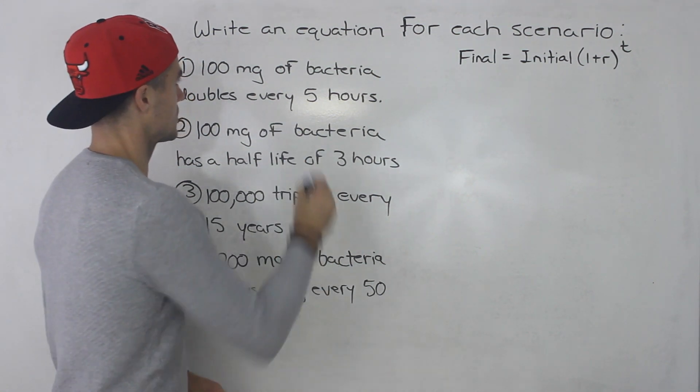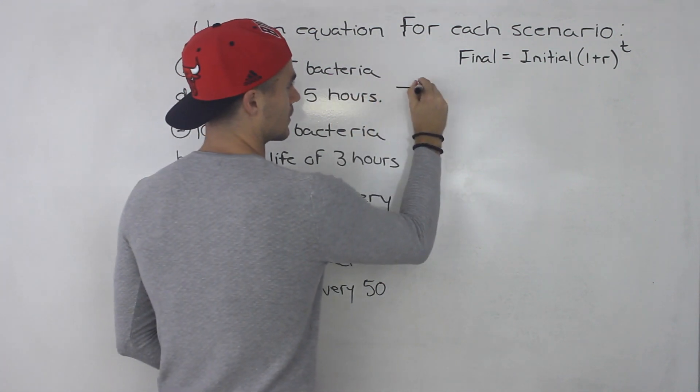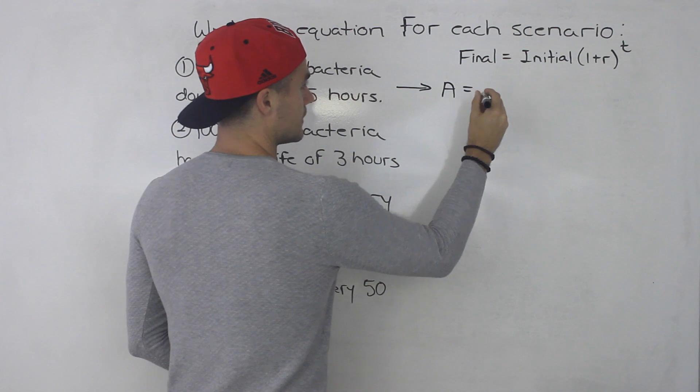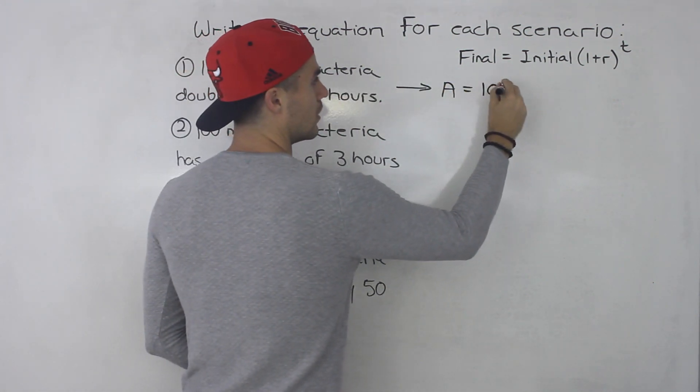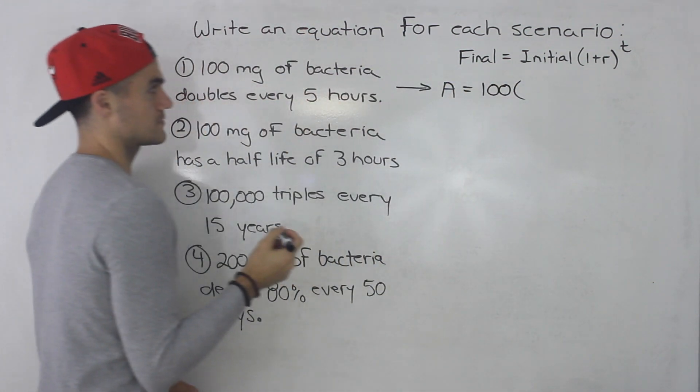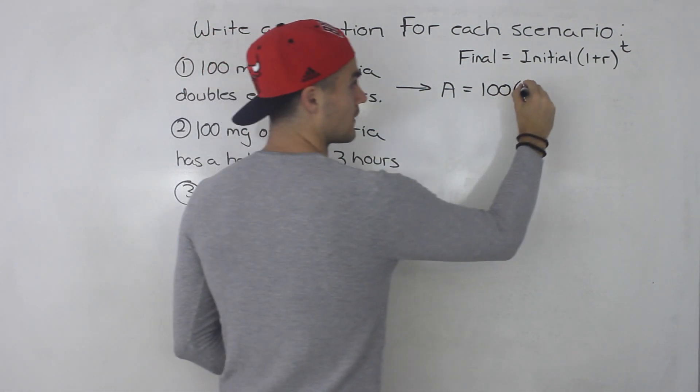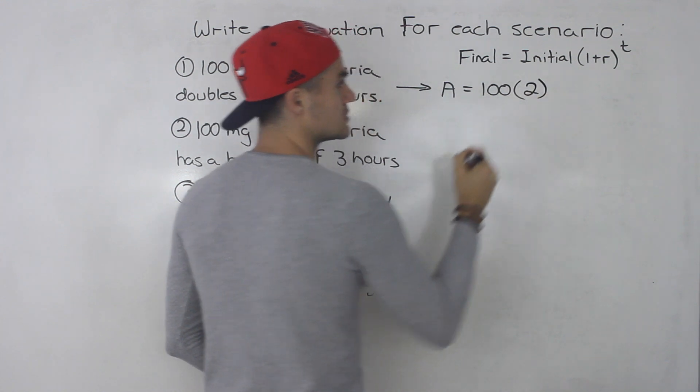basically what you do, so for the first one, we would say the final amount, let's call it A, is equal to the initial amount, 100 milligrams of bacteria. It's doubling every five hours. So we know that if it's doubling, this is going to be two.